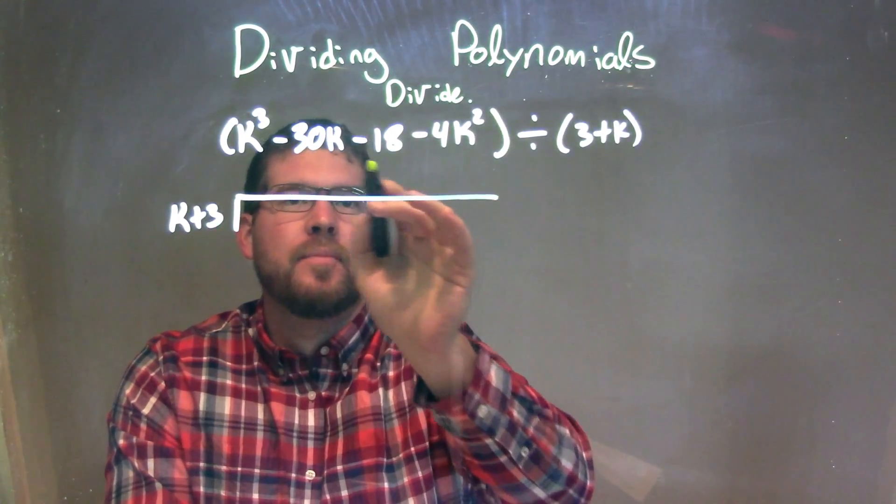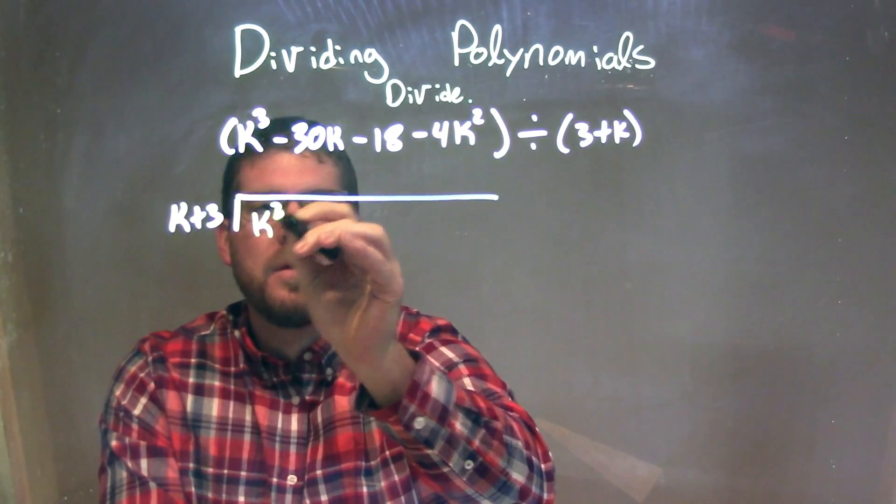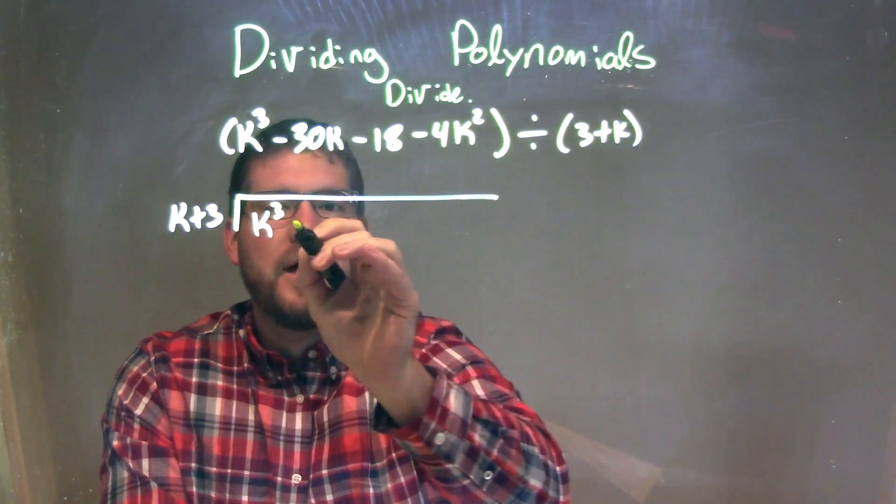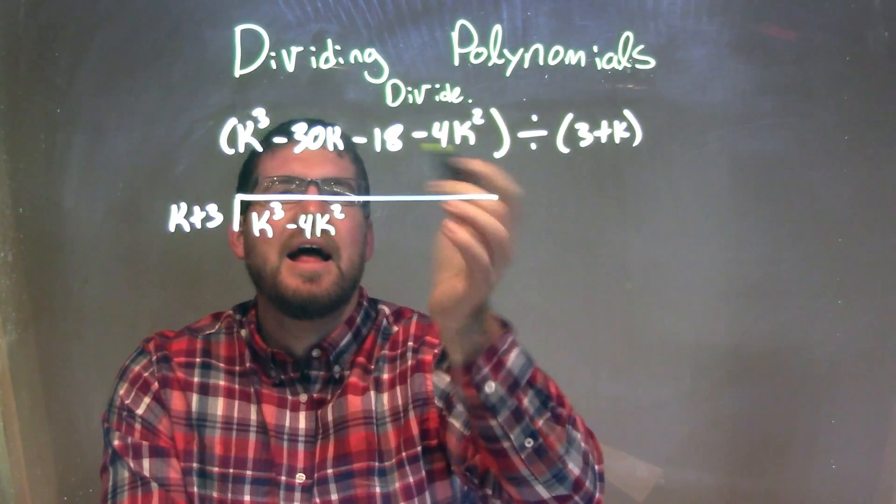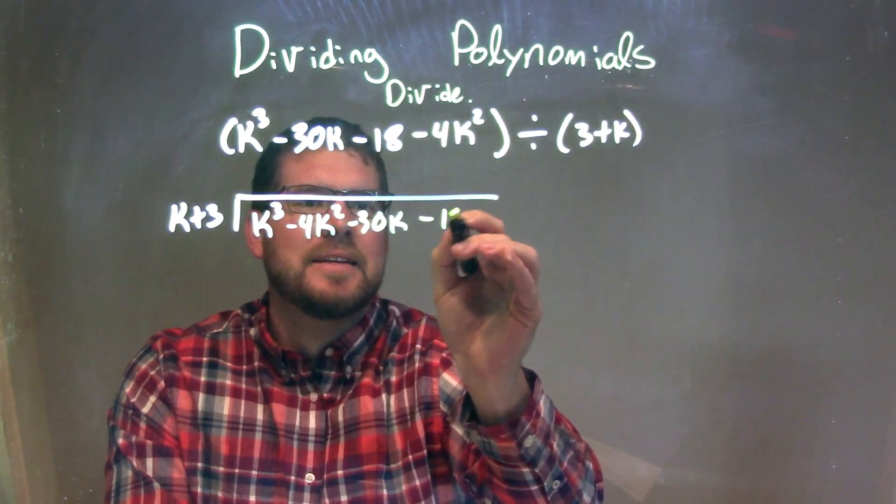And the same thing here with my dividend. Within the parenthesis, I'm going to rearrange it, highest degree first, k to the third. Then I have my minus 4k squared, my next highest degree. Then I'm subtracting 30k, and then a minus 18.